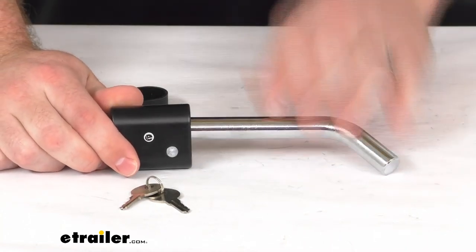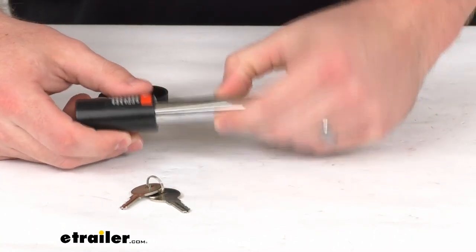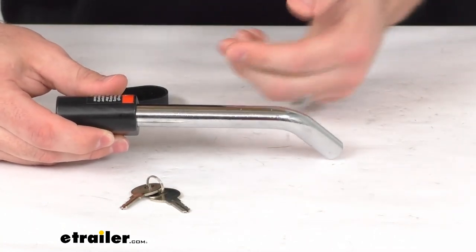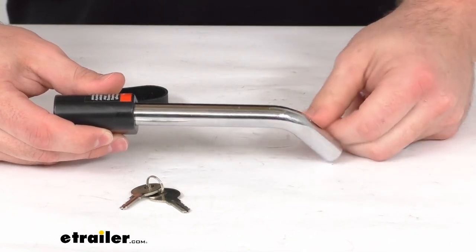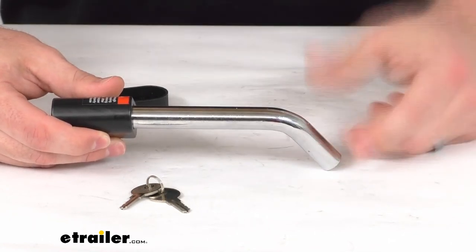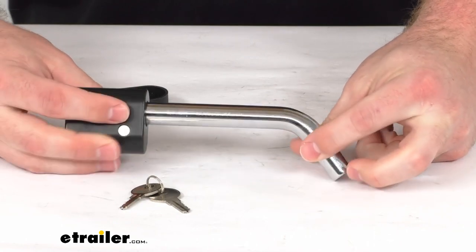This is a 5⅛ inch diameter pin so it's going to work with just about any 2 inch by 2 inch trailer hitch receiver that may be on your RV.